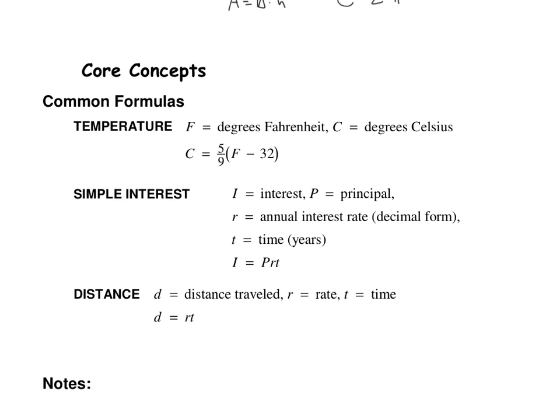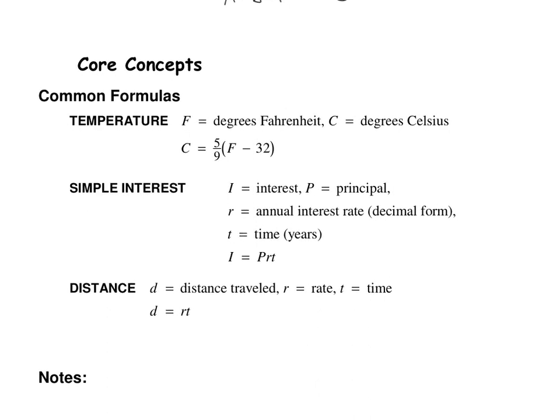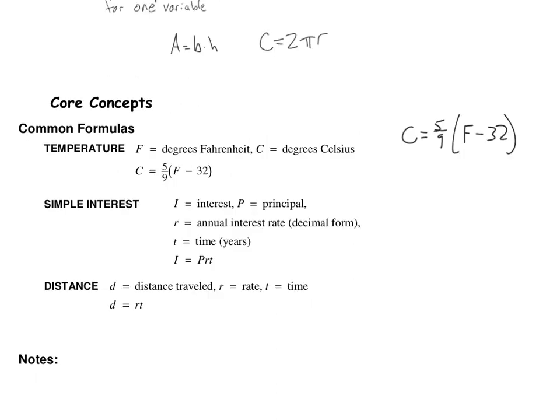All right, here's some common formulas. Here we have a formula for converting Celsius to Fahrenheit. In this formula here, if you know Fahrenheit and you want to find Celsius, it's all ready to go. However, what if you knew Celsius and you wanted to find Fahrenheit? Well, I don't have that equation here. No problem. We can take this equation and we can change it. We have our formula, C = 5/9(F - 32).